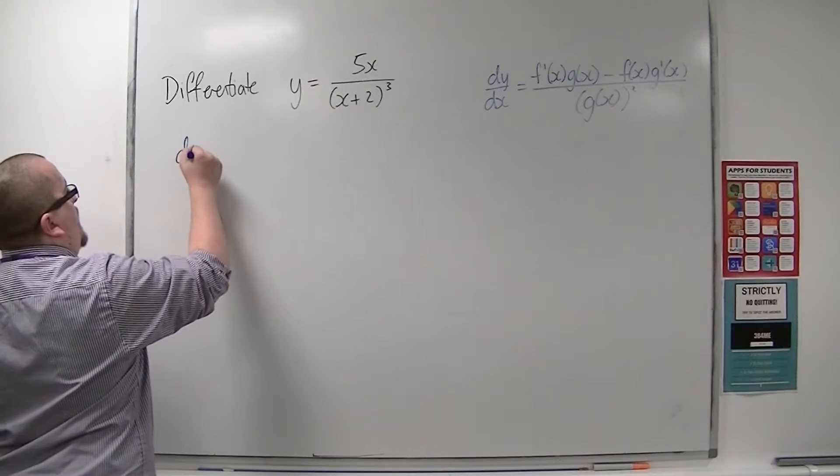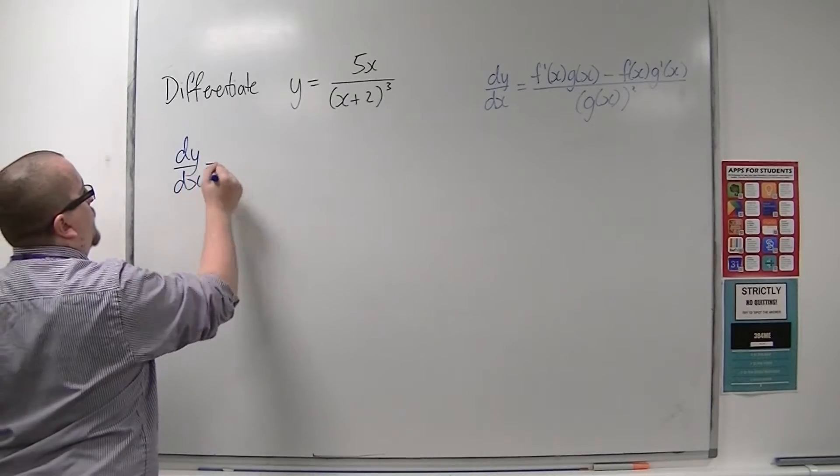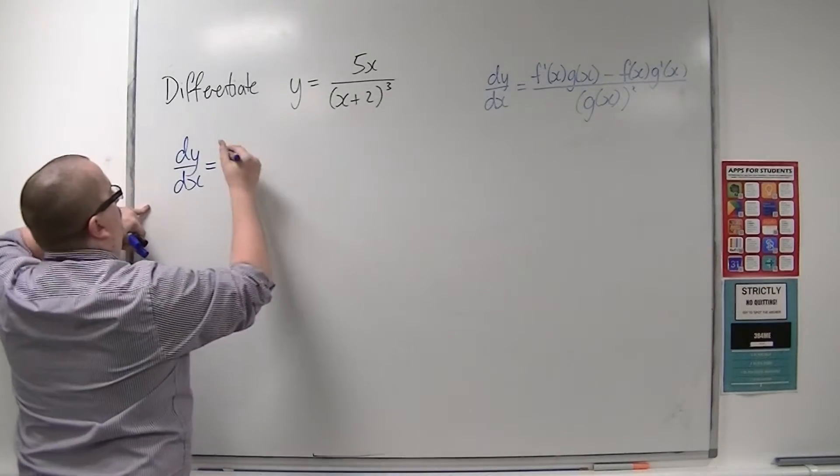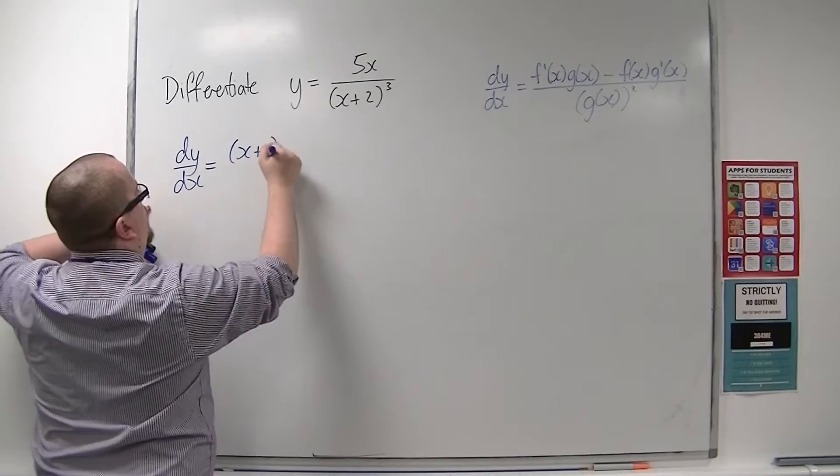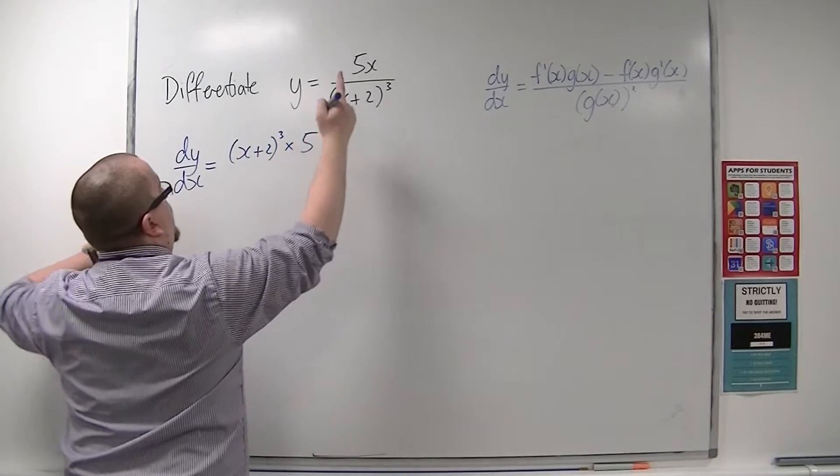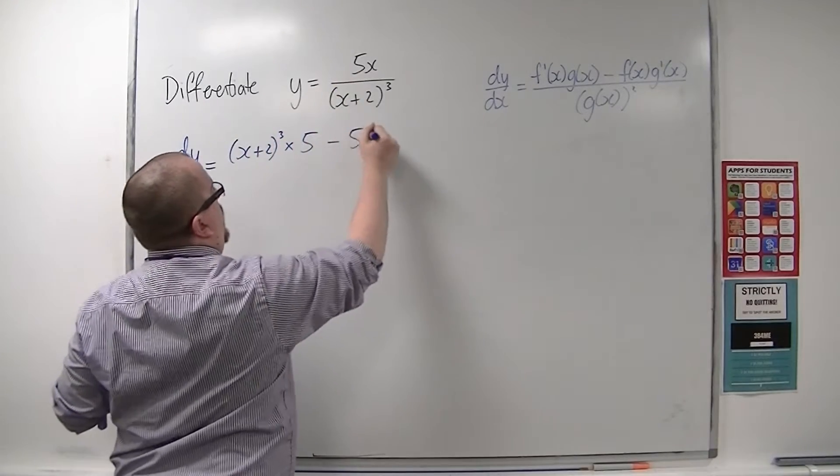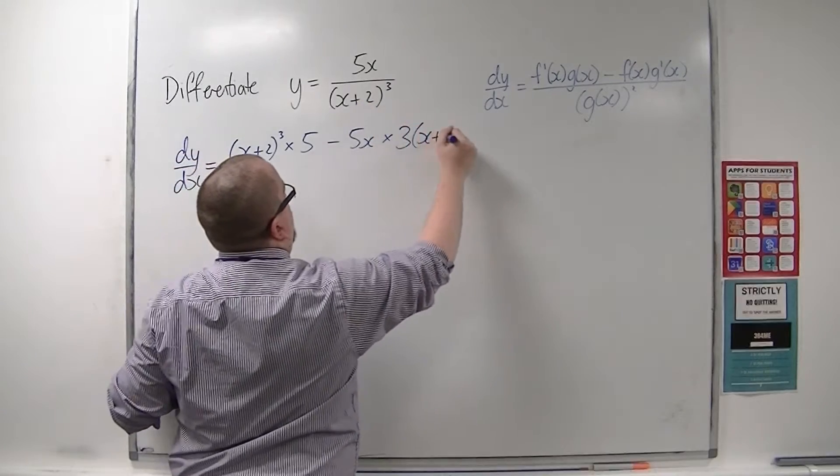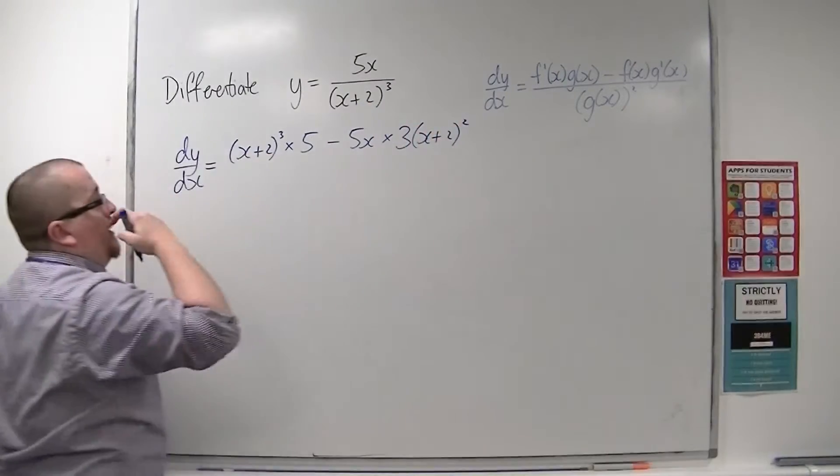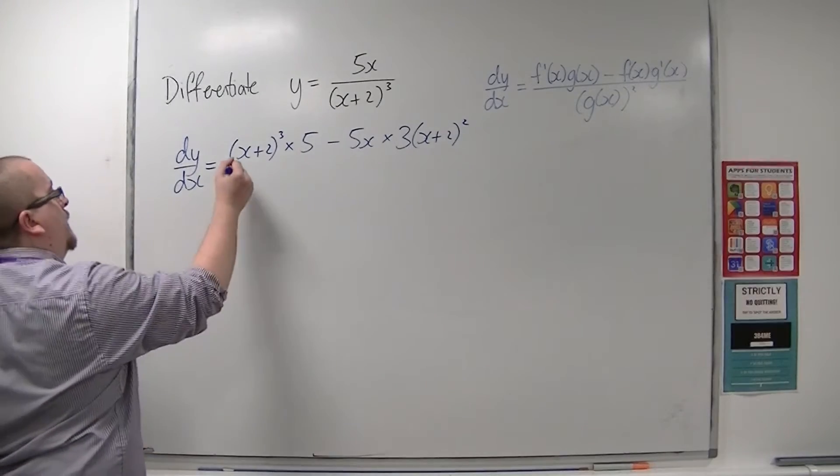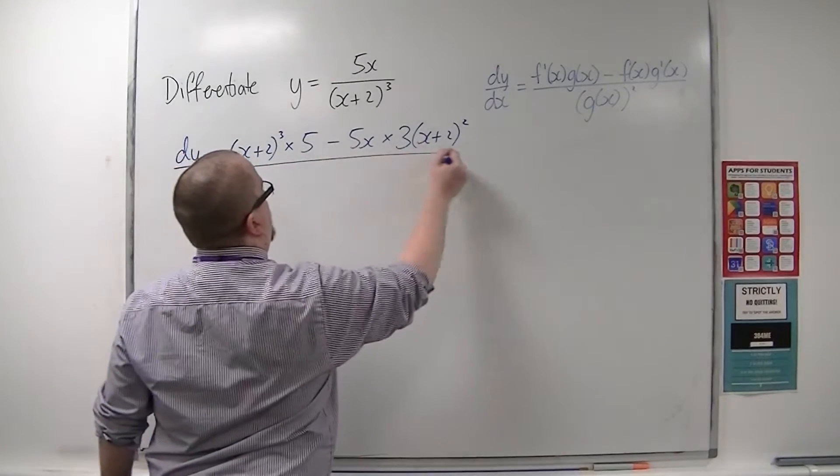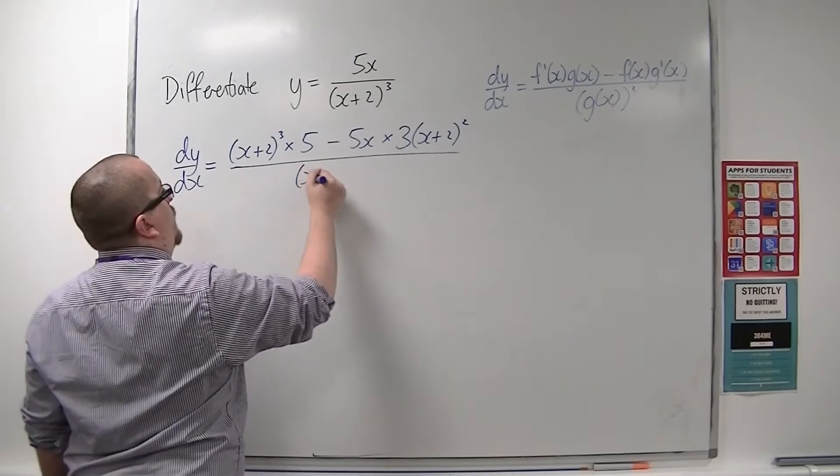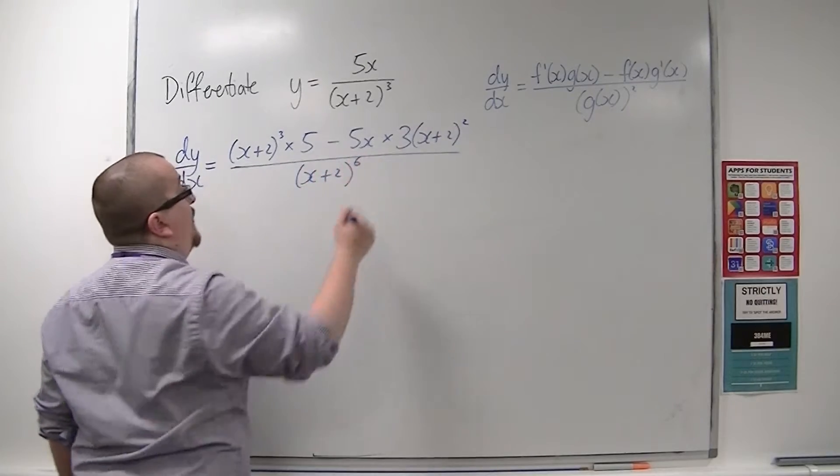So dy/dx in this case is the bottom, (x+2)³, times the derivative of the top, take away the top times the derivative of the bottom using the chain rule, which is 3(x+2)², divided by the bottom squared, which would be (x+2)⁶.